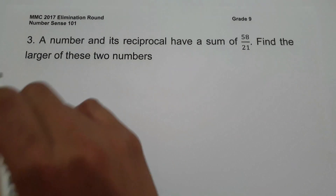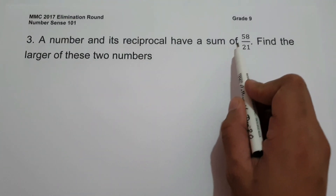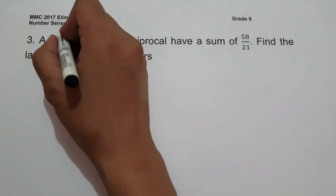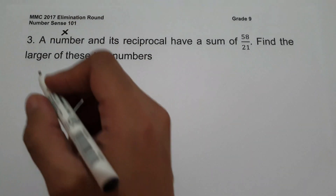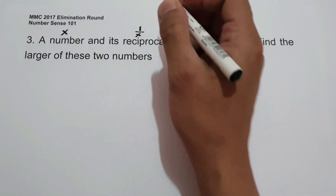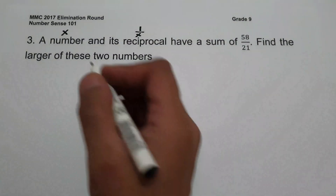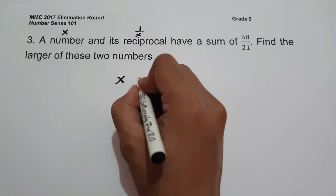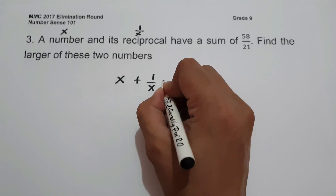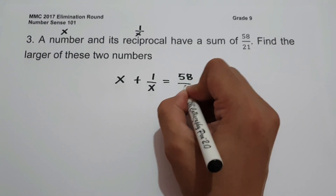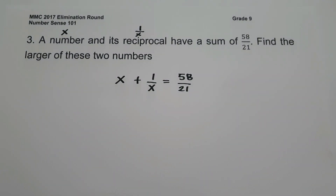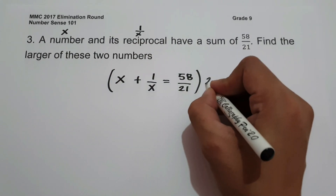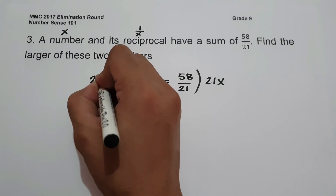For number 3, a number and its reciprocal have a sum of 58 over 21. Find the larger of these two numbers. Let x represent the number and 1 over x represent its reciprocal. Writing the equation: x plus 1 over x equals 58 over 21. To eliminate x and 21 as denominators, multiply the whole equation by 21x, which is the LCM of x and 21.